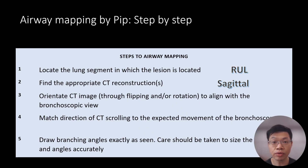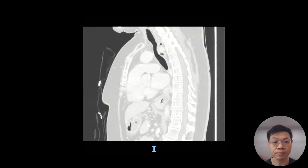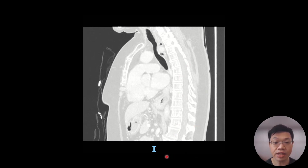Now that we have located the nodule in the right upper lobe RB2 segment and decided to use the sagittal CT, we need to proceed to steps 3 and 4: to orientate the CT image through flipping and/or rotation to align with the bronchoscopic view, and to match the direction of our CT scrolling to the expected movement of the bronchoscope. When using the sagittal CT, the posterior — as indicated by the spine — should be on the right, and the anterior — as indicated by the heart — should be on the left. It is important to be able to correctly identify the right upper lobe segment on the sagittal CT.